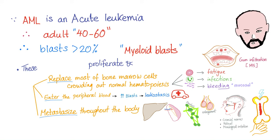AML is an acute leukemia, meaning patients are younger — not as young as ALL, but typically in their 40s and 50s. Since it's acute, you will have blasts greater than 20% of the marrow, but this time they will be myeloid blasts. These myeloid blasts proliferate and replace most of the bone marrow, resulting in pancytopenia.